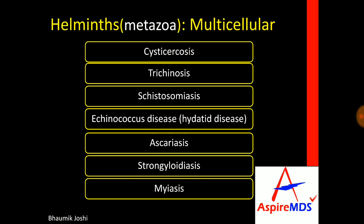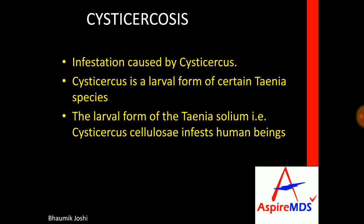Cysticercosis, as the name suggests, is a disease caused by infestation by cysticercus. Cysticercus is the larva of Taenia species. The larva of cysticercosis that affects human beings is known as cysticercus cellulosae and it is the larva of Taenia solium.